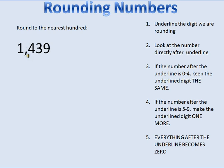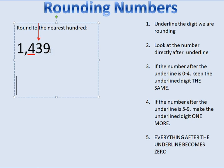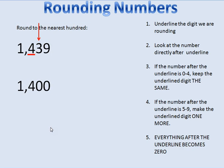Now I have numbers in the thousands place, but I do the same steps. Round to the nearest hundred — I underline the hundreds place: one, ten, hundred. The number after the underline is three, which is less than five, so I keep the underlined number the same. Everything before the underline stays the same, and the two numbers after the underline become zeros. So 1,439 rounded to the nearest hundred is 1,400.